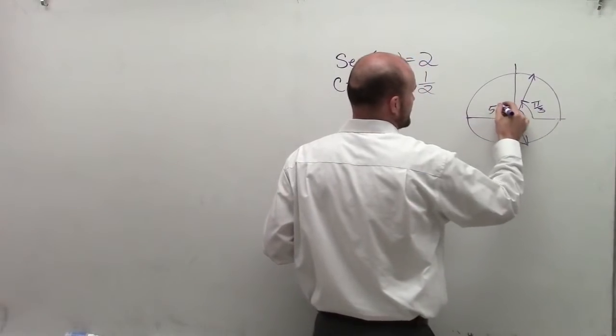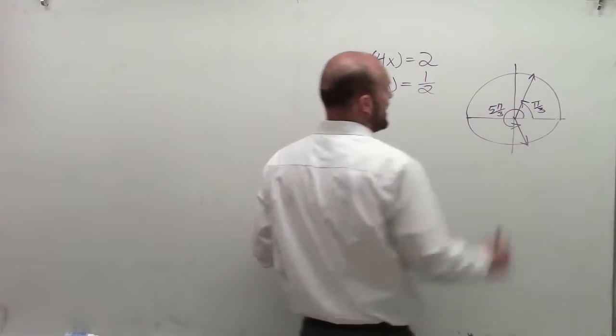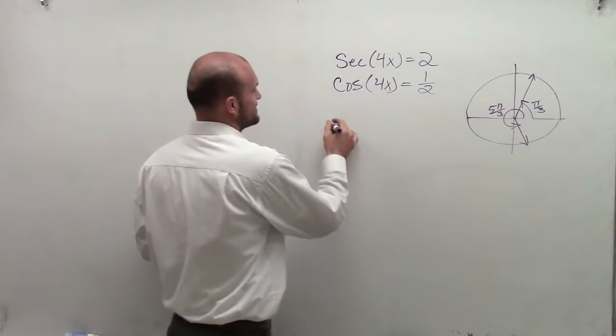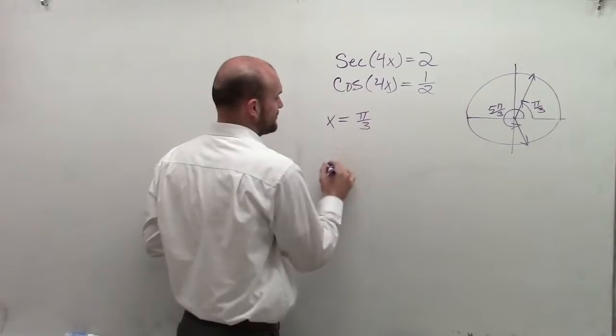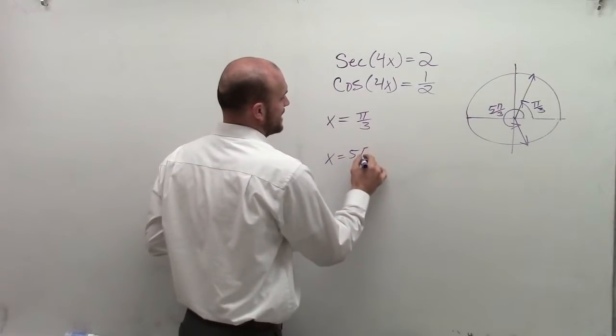And at the next angle down there, it's when my angle is 5 pi over 3. So therefore, I can say my solutions on 0 to 2 pi is x equals pi over 3 and x equals 5 pi over 3.